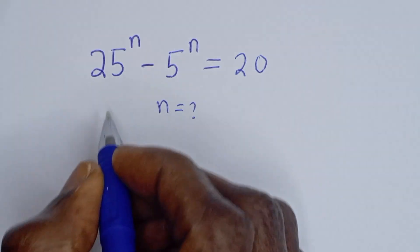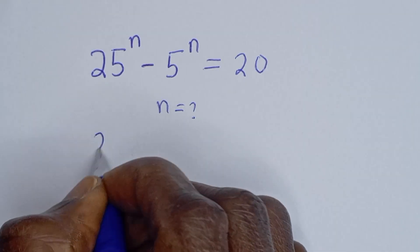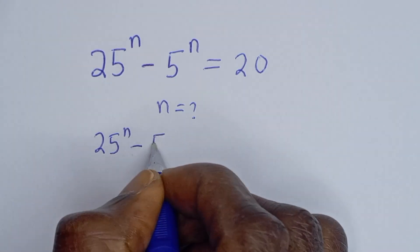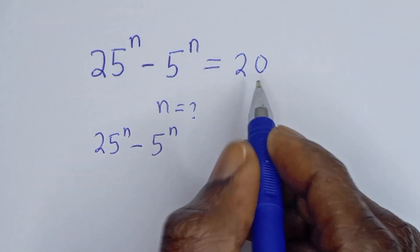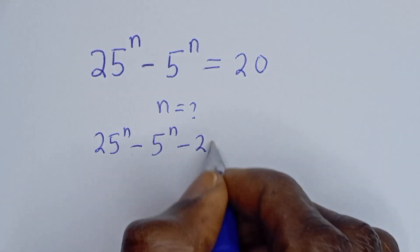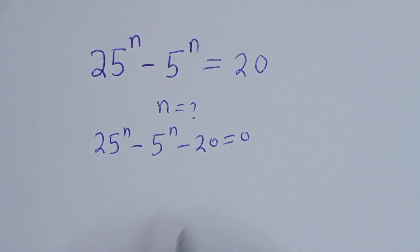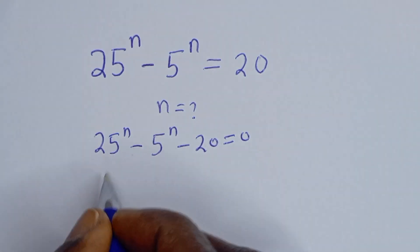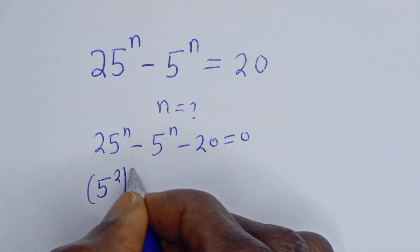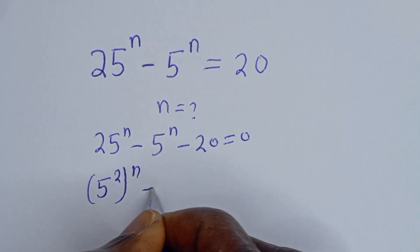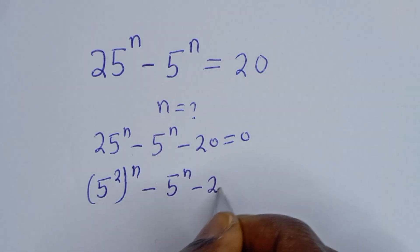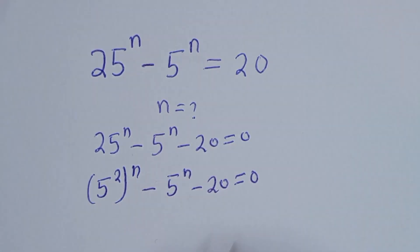From here, we have 25 to the power of n minus 5 to the power of n. If you bring this 20 to this side, it becomes minus 20 is equal to 0. Then 25 to the power of n can be written as 5 squared to the power of n, minus 5 to the power of n, minus 20 is equal to 0.